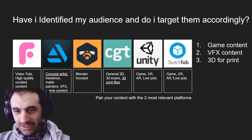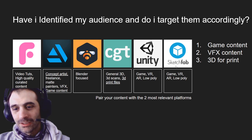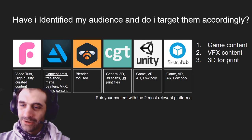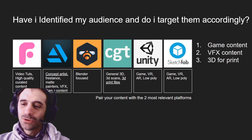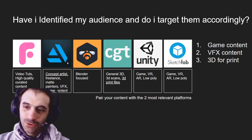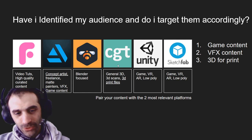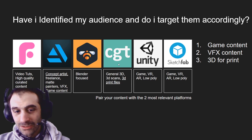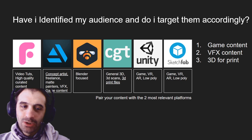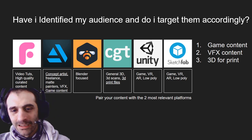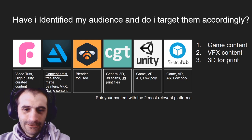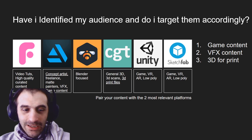For low poly or game content, the best places are probably Unity, Sketchfab, or CGTrader in the low poly section. If I sold high-quality VFX content that freelancers, concept artists, or matte painters want to use in the film or VFX industry, then ArtStation would be the first place I go. If I sold general 3D files, 3D scans, or 3D print files, I would do that on CGTrader — probably the best general sales platform. For high-quality video tutorials with 3D content, I'd use FlipNormals. Try to pair your content with the two most relevant platforms.